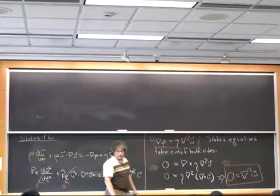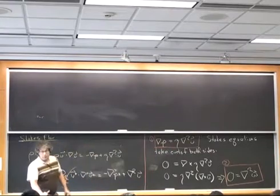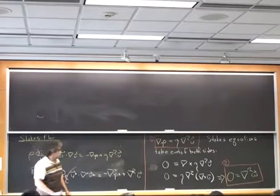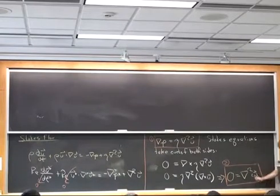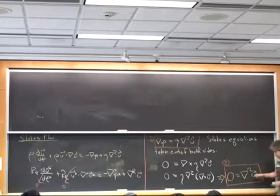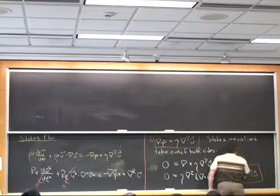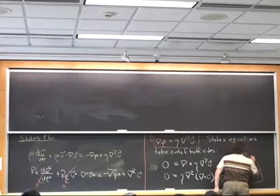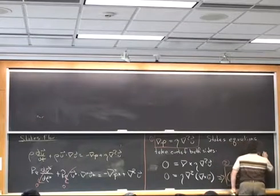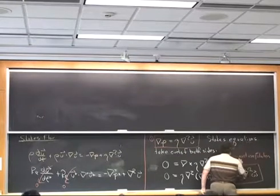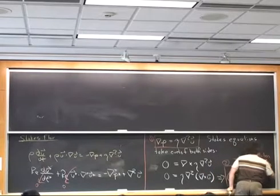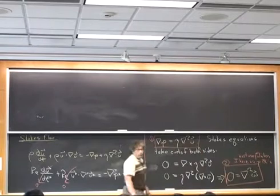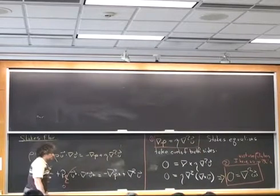However, what it does do is it lets me anticipate what boundary conditions I might be using to solve these equations. If I use this form, I have variables in terms of pressure and velocity. Naturally, I'm going to want to have boundary conditions in terms of pressure and velocity. Here, I have no pressure, and to solve this equation, I don't need pressure boundary conditions. And so this form is going to be the most useful when I don't have boundary conditions for the pressure.